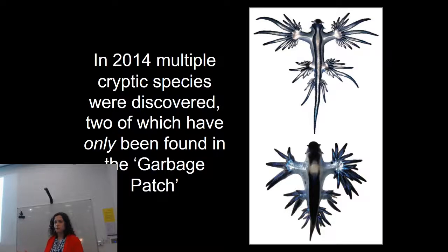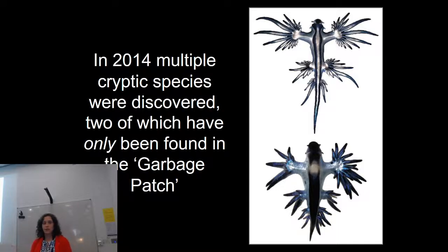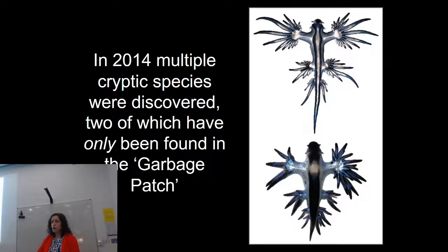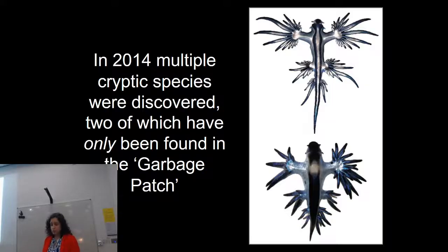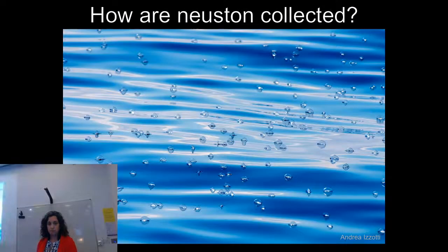Multiple oceanic bird species eat neuston. Ocean sunfish eat neuston. Turtles eat neuston. Commercially important and predatory fish interact with and are part of the neuston food web. In addition to all these neustonic interactions, we're discovering new neuston species every day — for the North Pacific subtropical gyre, two species of blue sea dragons were discovered in 2014 that have only been found there, showing that at least some species may have a restricted distribution.